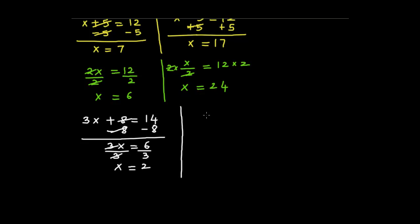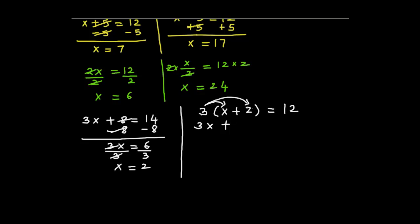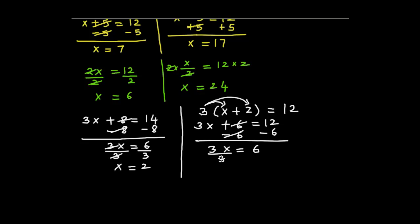Now suppose I am taking an example with parentheses: 3 times (x plus 2) is equal to 12. Since we have a parenthesis, multiply each term inside the parenthesis with 3 — that means we are using the distributive law. So 3 times x is 3x, plus 3 times 2 is 6, is equal to 12. Since we have here plus 6, add minus 6 on both sides. So 3x is equal to 12 minus 6, which is 6. Divide both sides by 3. So x is equal to 2.